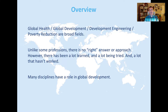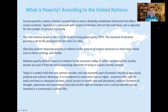So what is global health, global development, development engineering, and poverty reduction? These are all catch-all terms for the practice of engaging with issues of poverty in developing countries. Unlike some professions, there's no right answer — there's no textbook saying 'here's how you do global poverty reduction.' There's extreme debate about whether this field should even exist, whether there should be trade instead of aid, and whether we inadvertently prop up totalitarian states. But a lot has been learned — you don't go to a village and discover poor people thinking you'll solve it with elbow grease.